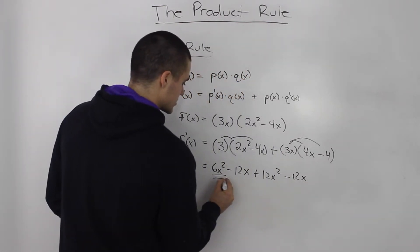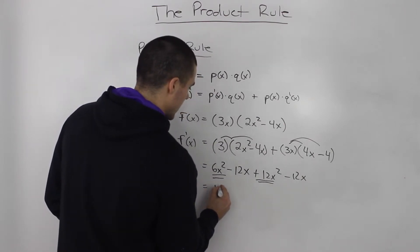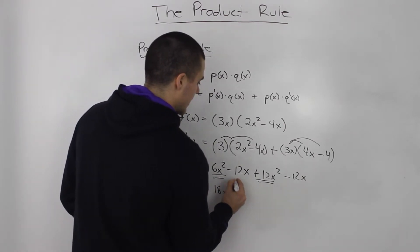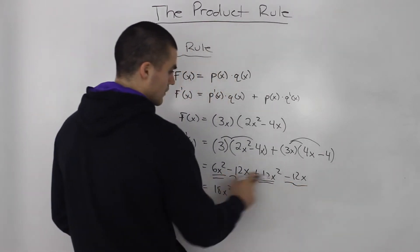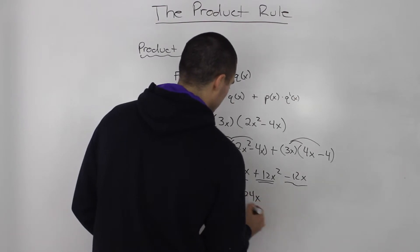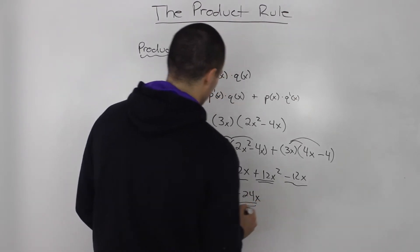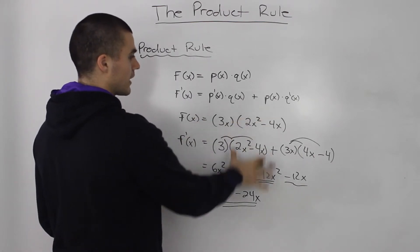So, collecting like terms, we got this 6x squared and we got this 12x squared. So that just ends up being 18x squared. And then this negative 12x and negative 12x, so minus 12x minus 12x. That just ends up being negative 24x. So, that's the derivative of this function and we applied the product rule.